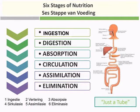The six steps of nutrition — some books only include five because they don't include circulation. Let's go through them quickly: ingestion is putting the food in your mouth; digestion is the breaking down of food into simple substances; absorption is where the food is absorbed into the bloodstream; circulation is the food being taken from the digestive tract to the cells; assimilation is where the nutrients go into the cells; and elimination is where waste gets eliminated.